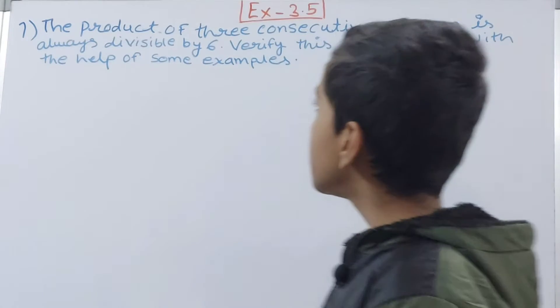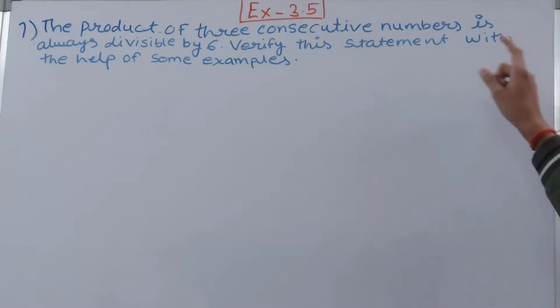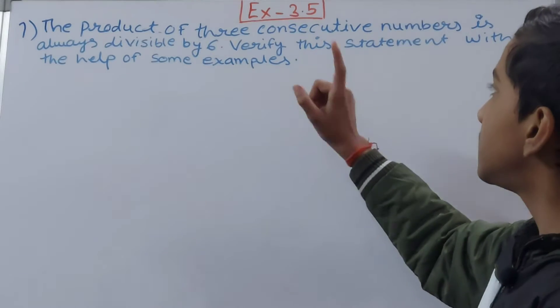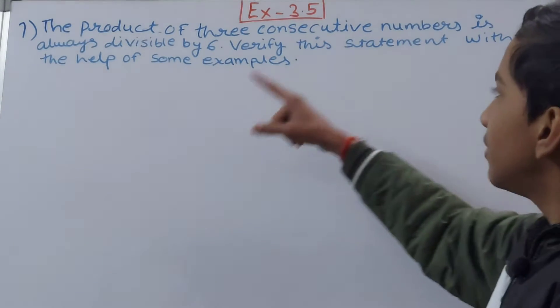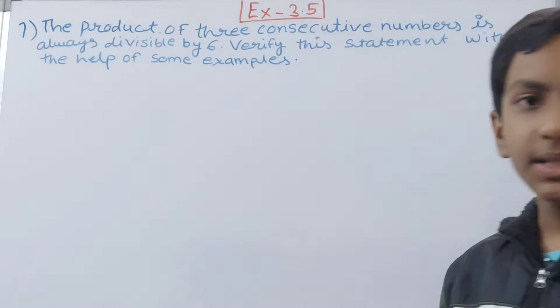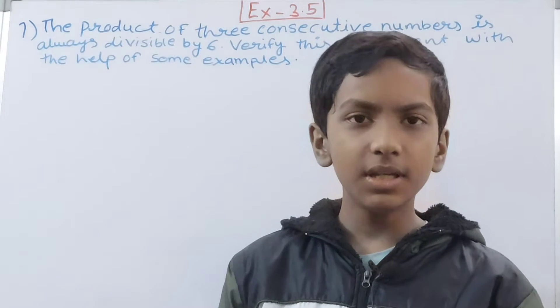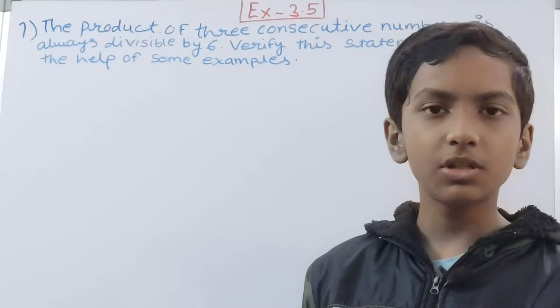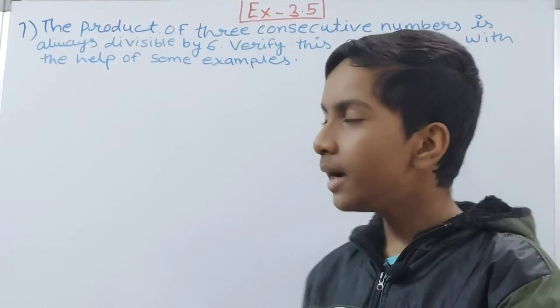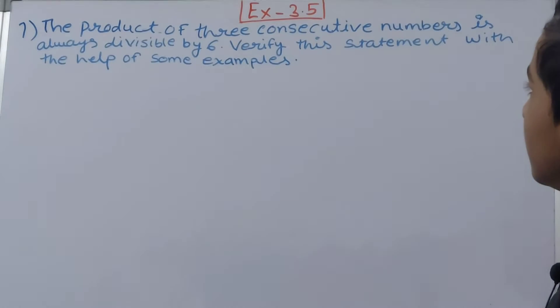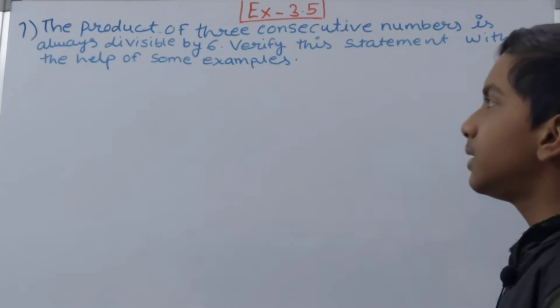The question says the product of three consecutive numbers is always divisible by 6. Verify the statement with the help of some examples. So we have to verify the statement that the product of any three consecutive numbers is always divisible by 6.